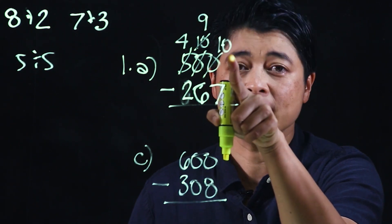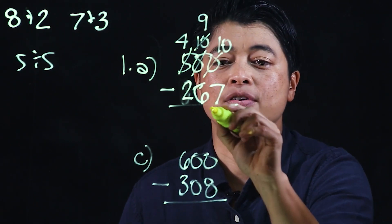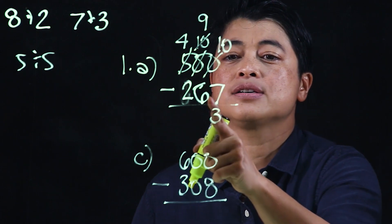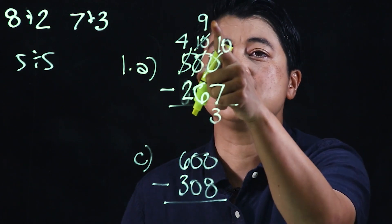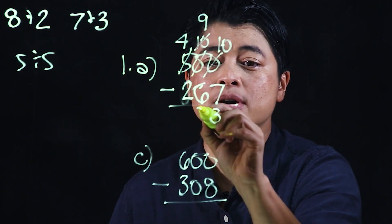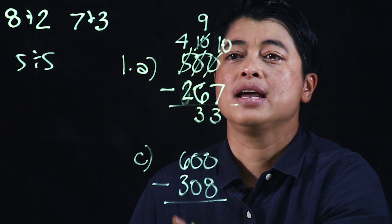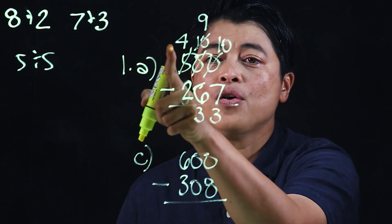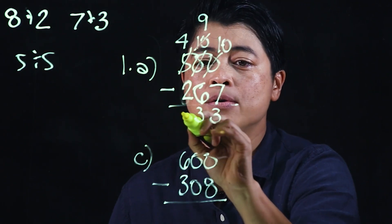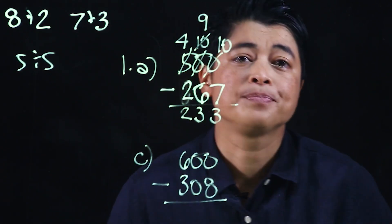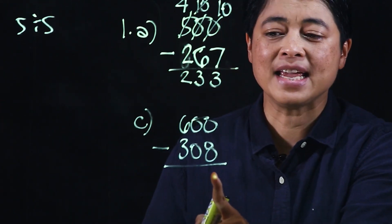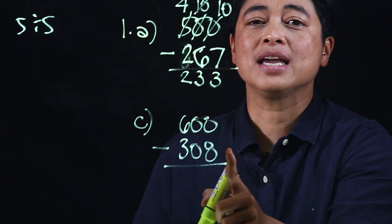So we start with a 7, we need 3 to get to 10 — and that's all we need, therefore this is 3. Then 9 take away 6 is 3, and 4 take away 2 is 2.